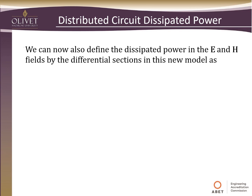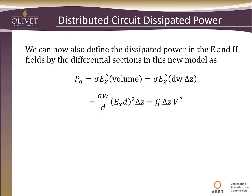We can also define the power dissipated in the E and H fields for these differential sections in the new model. Looking at the power dissipated across those sections, when we plug everything into our cell models, we come up with the conductivity per unit length times our differential length times the voltage squared.